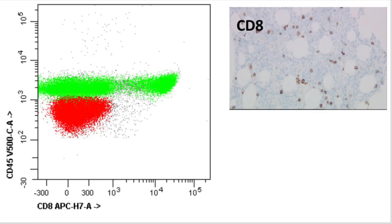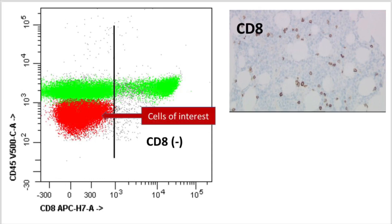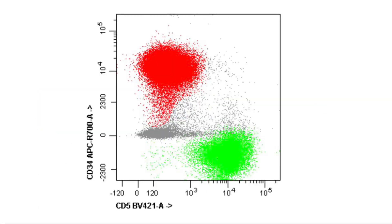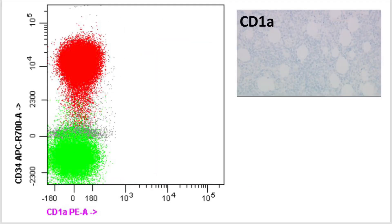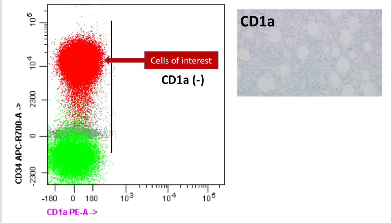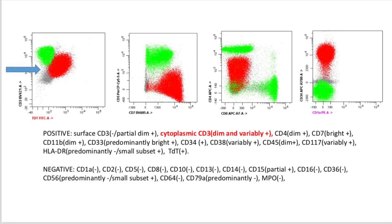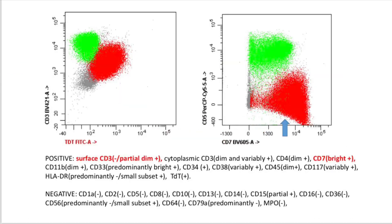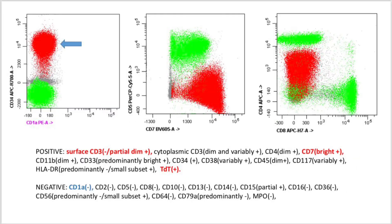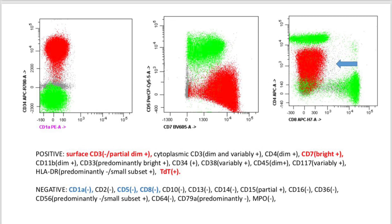Looking at additional T-cell markers, the population of interest is negative for CD8 and, by flow cytometry, also negative for CD5. CD1A, which can be considered a marker of immaturity in T-lineage populations, is also negative. So the overall immunophenotype shows: cytoplasmic CD3 dim and variable, CD7 bright positive, TDT positive, CD1A negative, CD5 negative, and CD8 negative.